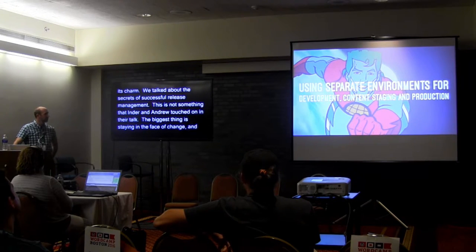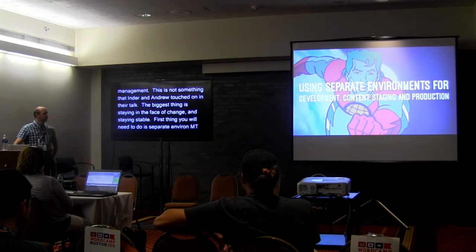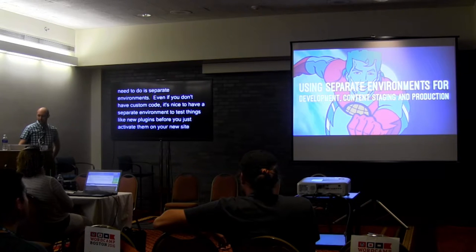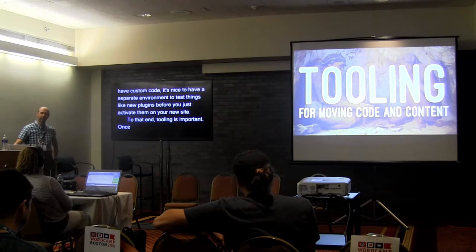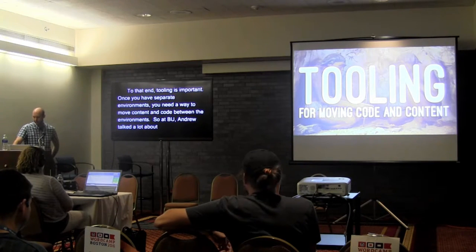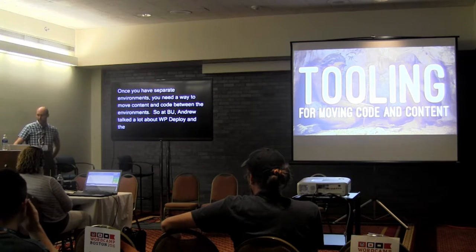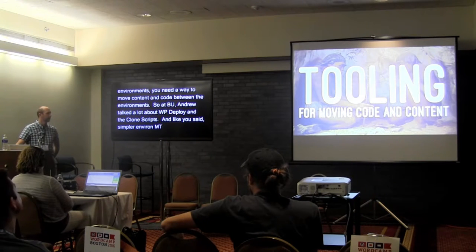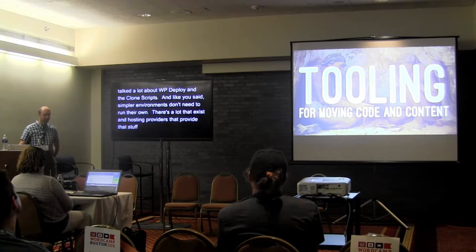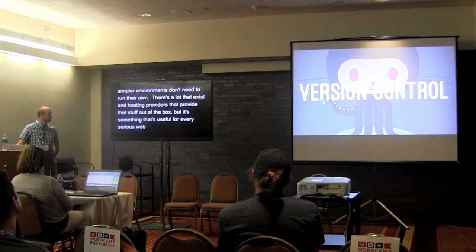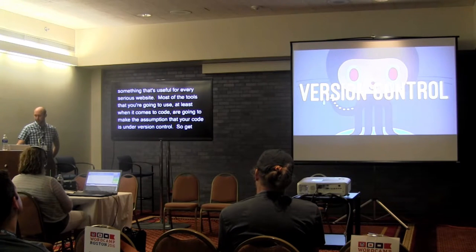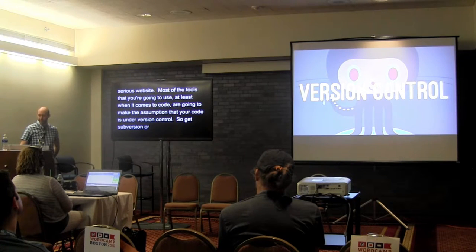The first thing you'll need is separate environments. Even if you don't have custom code, it's nice to have a separate environment to test things like new plugins before activating them on your live site. Tooling is important — once you have separate environments, you need a way to move both content and code between them. At BU, Andrew talked a lot about WP Deploy and clone scripts. Simpler environments don't need to roll their own; there are a lot of existing open source tools and hosting providers that provide that stuff out of the box. Most tools, at least for code, assume your code is under version control — get Mercurial, Subversion, Git; it doesn't really matter as long as you pick one and use it effectively.